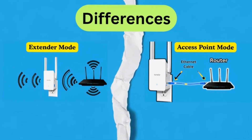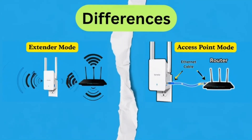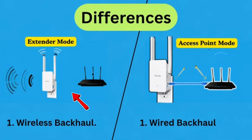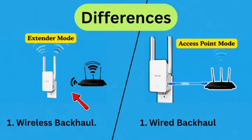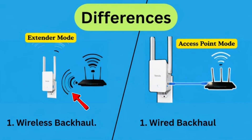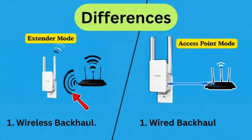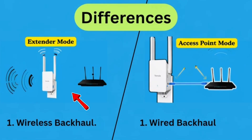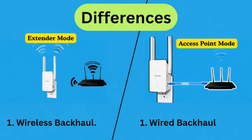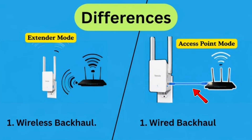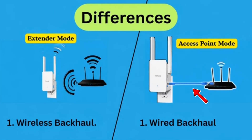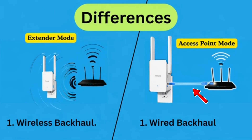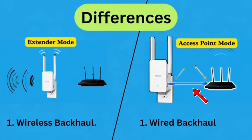Let's quickly check some key technical differences. The extender creates a wireless backhaul because it is connected to the router wirelessly, whereas access point mode is connected to the router via wired backhaul.